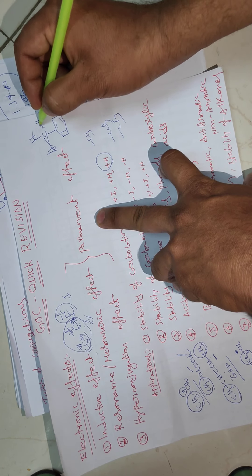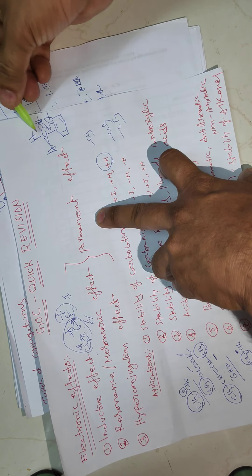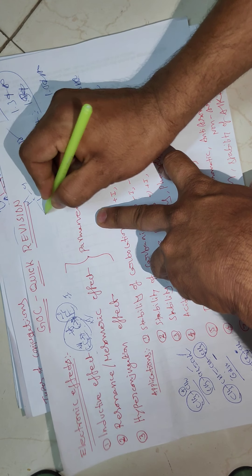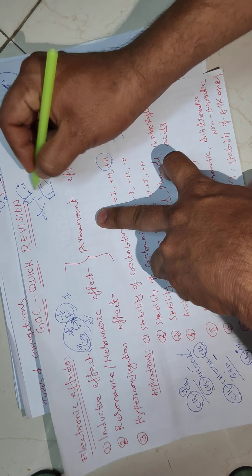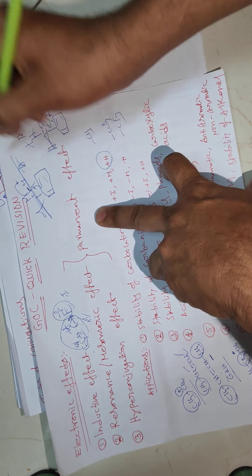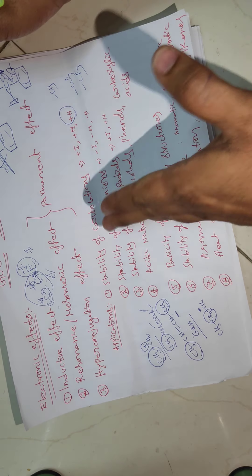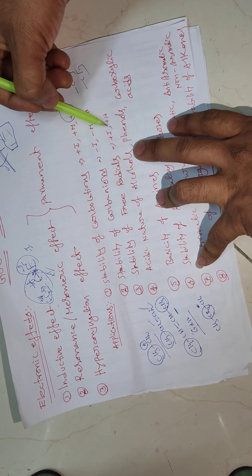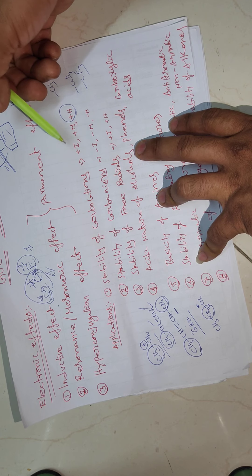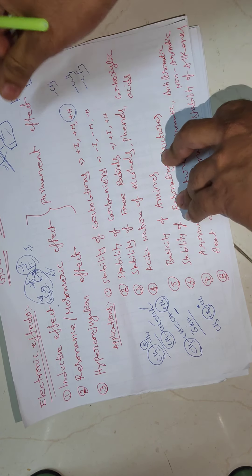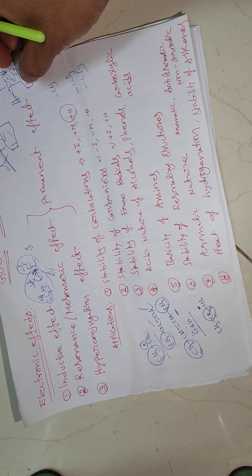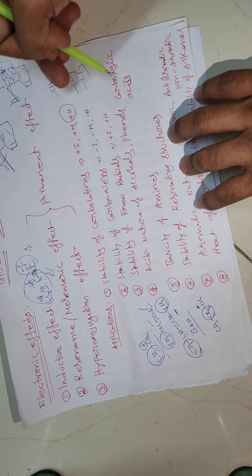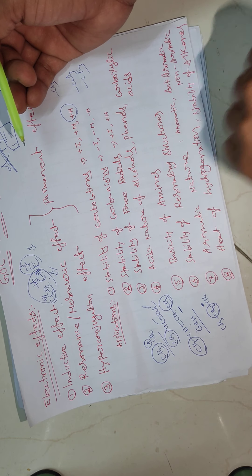Carbanions are stabilized by minus-I, minus-M, or minus-H effects. The minus-H effect means reverse hyperconjugation, observed in CCl3 or CF3. The plus-H effect means, for example, a methyl group attached to benzene — its sigma bonding electrons are donated to benzene, so it is a plus-H group. CCl3 attached to benzene is a minus-H group because chlorine attracts electrons. Stability of free radicals is explained on the basis of hyperconjugation or inductive effect — more alpha hydrogens means more stable radical.